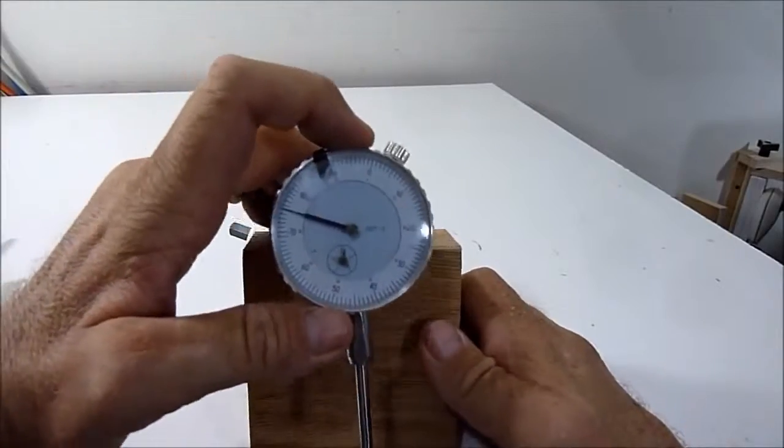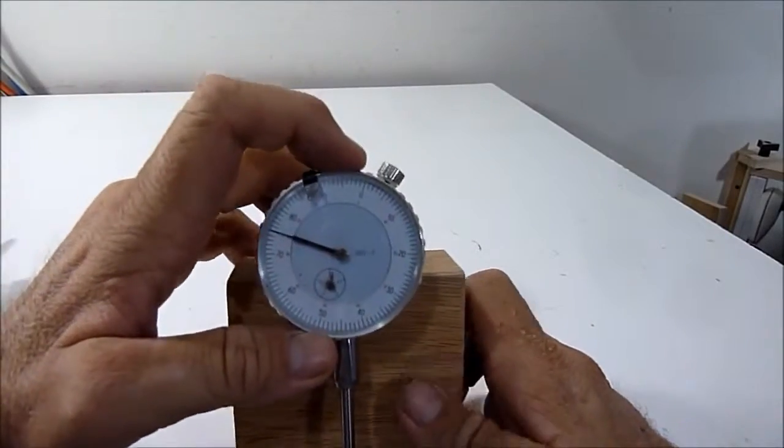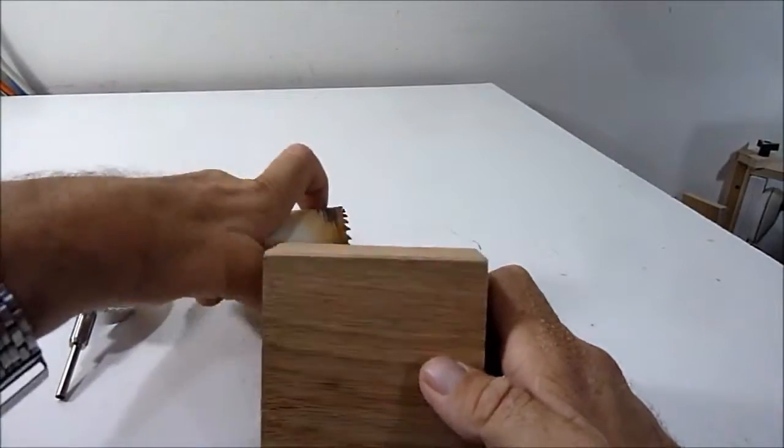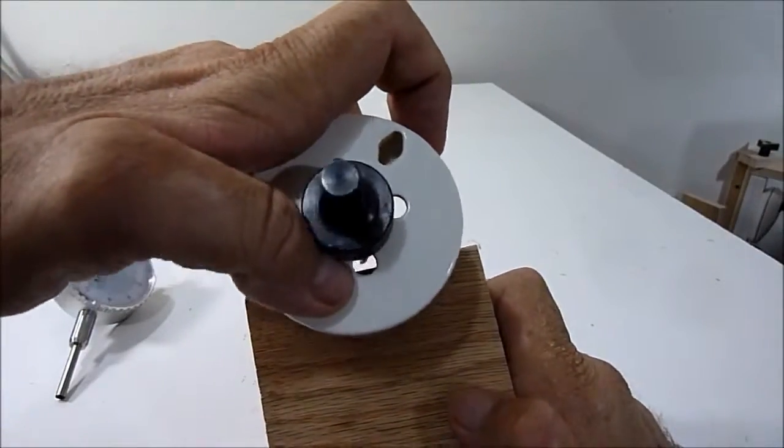What I'm going to do is mount the dial indicator into this block, so I'll use my hole saw to cut a small piece out of here.